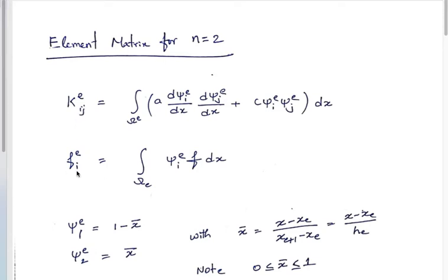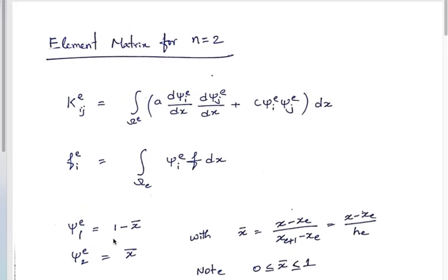These are the definitions for K_{eij} and f_{ei} that we have to evaluate. The first thing we do is define a local coordinate x_bar, defined as (x minus x_e) divided by (x_{e+1} minus x_e). The value of x_bar at local node 1 — which corresponds to x equals x_e — is 0.